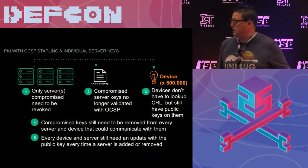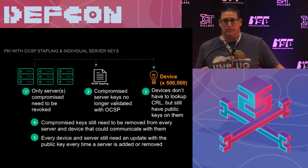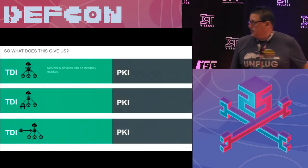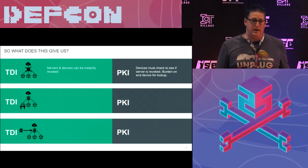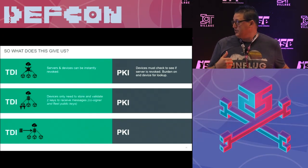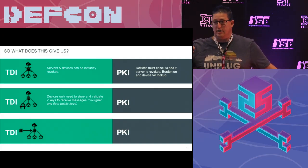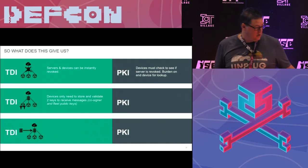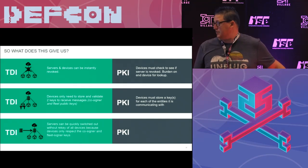OCSP tried to fix this — you send the verification down with the actual request — but the problem is the public key is still on the device. So when you revoke, you still have to go remove it. The difference with TDI is that servers can be revoked instantly. With PKI you have to pull the public key off. Devices only store two keys: the TDI service and the fleet. They don't store every public key for every server. This is that separation of authorization and authentication. With PKI, you overload these devices with every public key they need to have access.